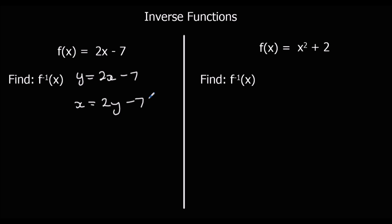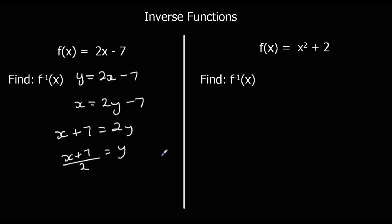Then I need to make y the subject of the formula again. Add 7 to both sides: x plus 7 equals 2y. Then divide both sides by 2, so y equals (x plus 7) all over 2. So the inverse function is (x plus 7) all over 2.